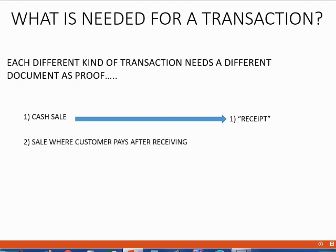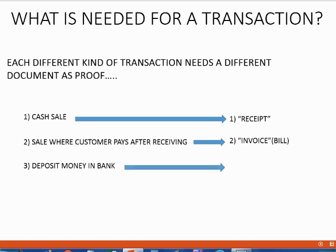If we give a customer a service, and at the moment we give the service, the customer only promises to pay, well, in that case, we would give an invoice or a bill. If we give a service and the customer owes us money, that's a transaction, and the proof of that transaction would be the invoice or bill the customer signs. If we deposit money in a bank, that's a transaction, and the proof of that transaction is the document called a deposit slip.